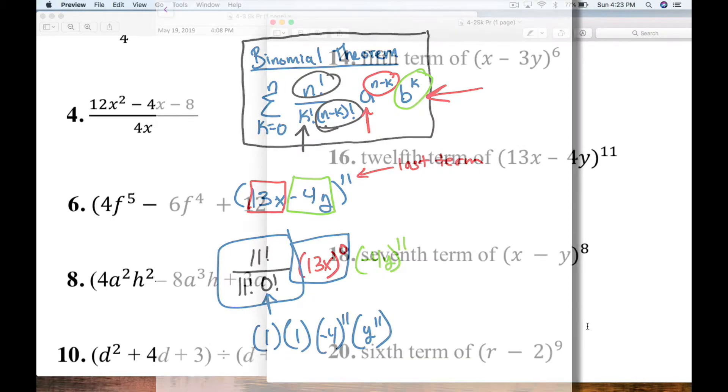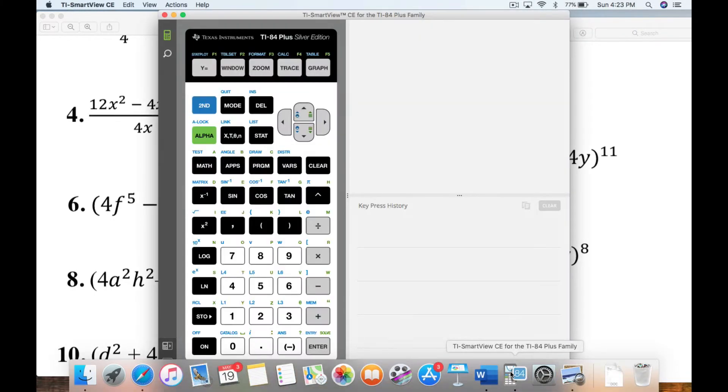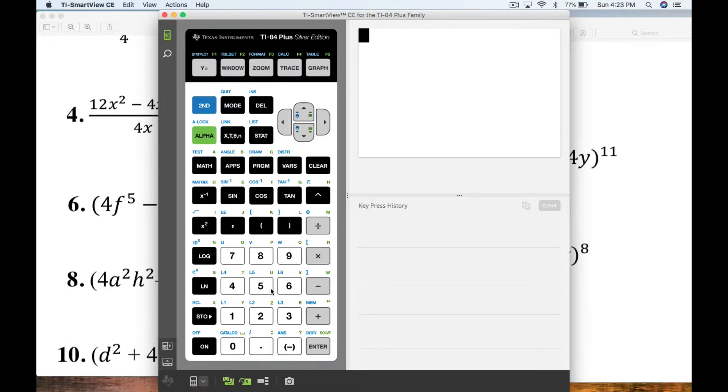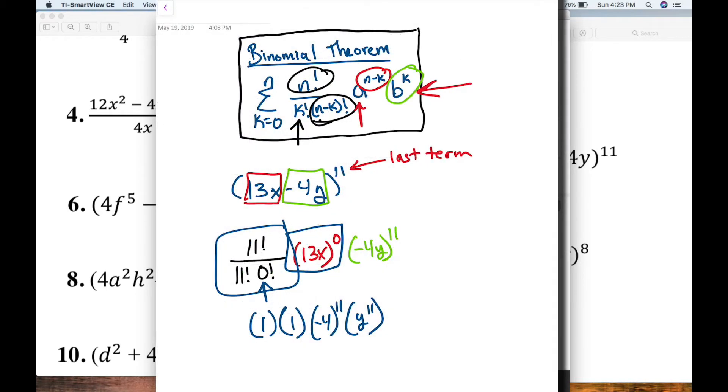I have negative 4 raised to the 11th power times y raised to the 11th power. And so I'm going to go to my calculator. I'm going to plug in, I'm going to do open parentheses negative 4. That way my calculator knows that it's negative 4 that I'm raising to the 11th power.